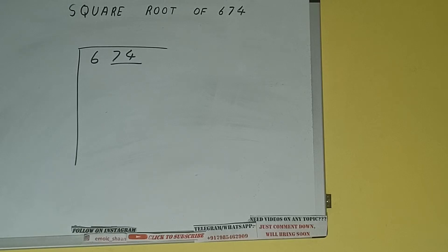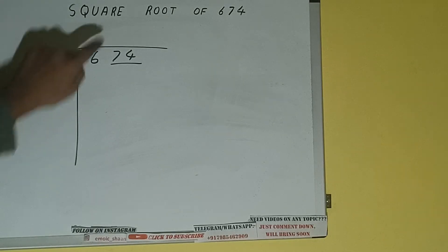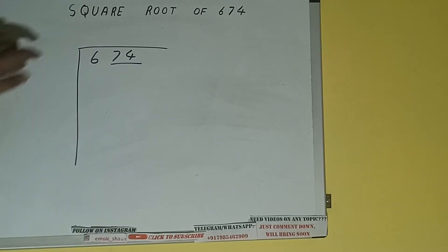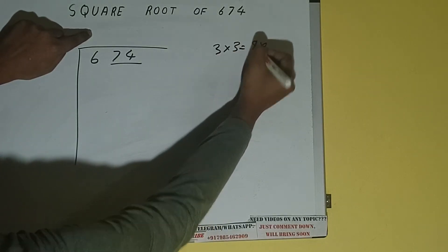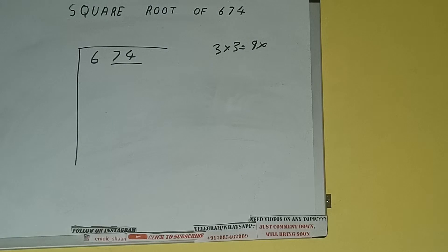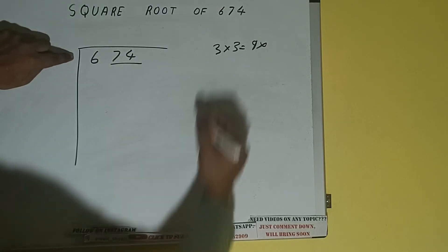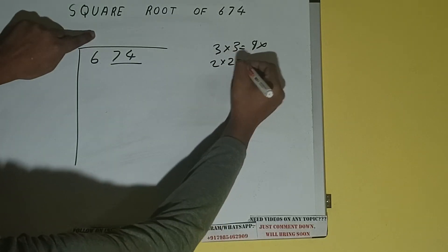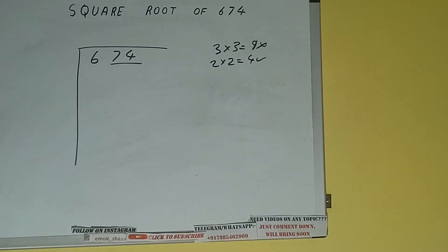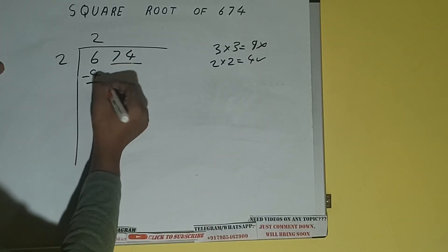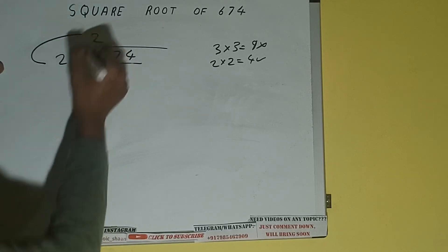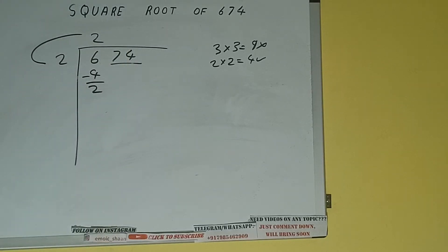The rule is: whatever number we write here, we have to write here also. So if we write 3 here and 3 here, it will be 9, which is greater than 6, so we cannot take it. If we write 2 here and 2 here, it will be 4, which is good to take. So 2 here and 2 here, 4 subtract, 2 will be left. We did 2 into 2, so add both. 2 plus 2 will be 4.